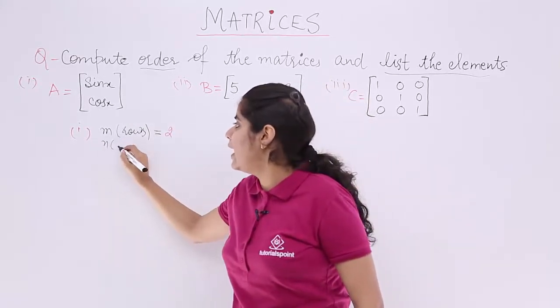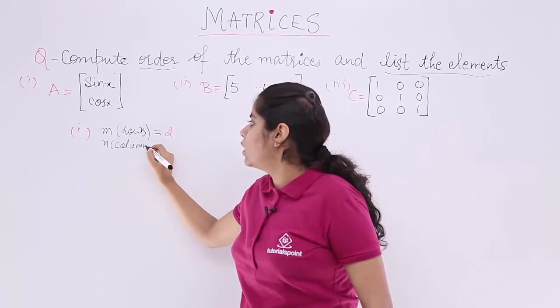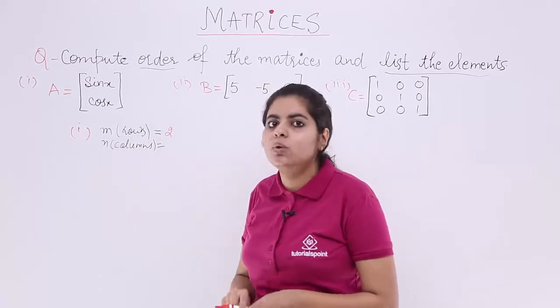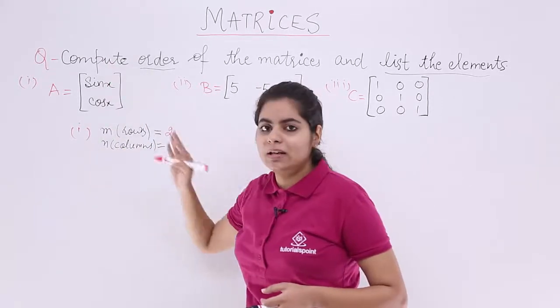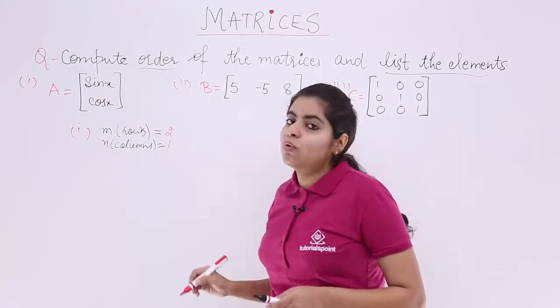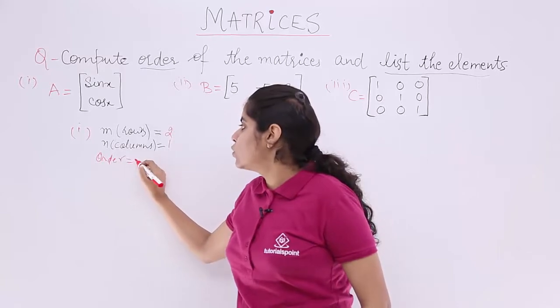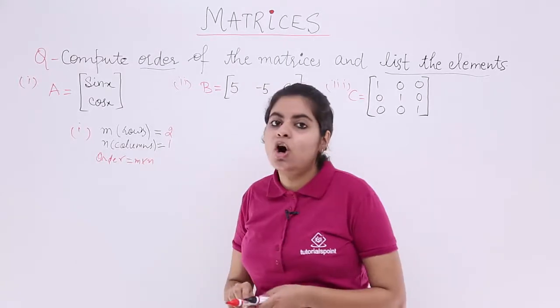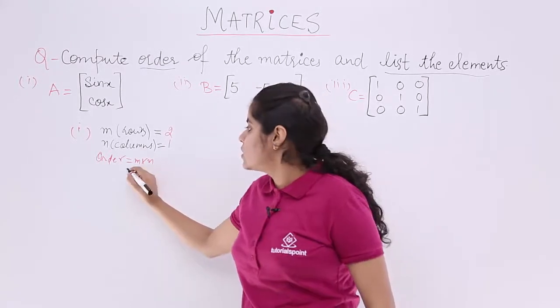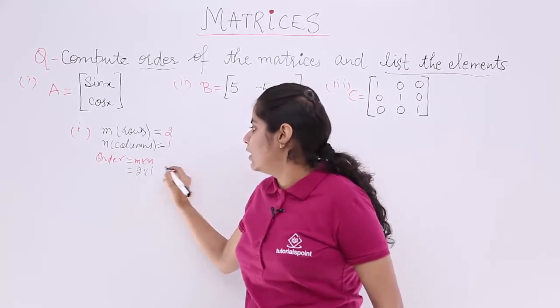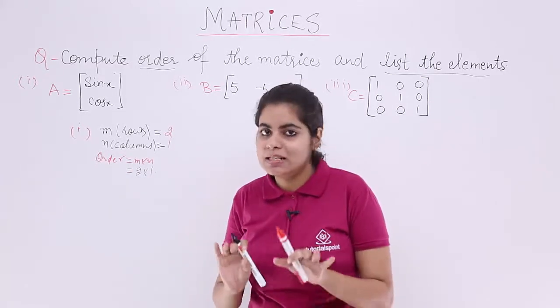What about N? N is the columns. How many columns? Only one column. Vertical, one column. So what is order? Order is M into N or M by N, which is 2 by 1. So this is the order. The first answer is obtained.